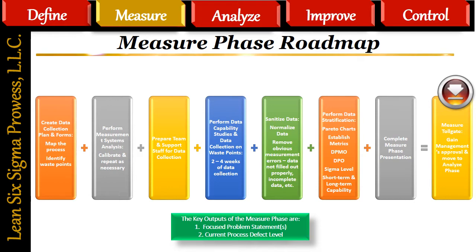The key outputs of the Measure phase are: 1. Focused problem statements, and 2. Current process defect level.